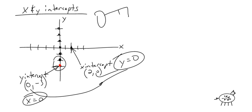Let's use our intercepts. Once you find those intercepts — you'll set x equal to 0 and y equal to 0 — once you find them, you just draw a line between them. That's all I'm looking for: the actual x and y intercepts, and then the line between them.